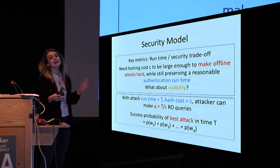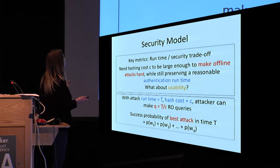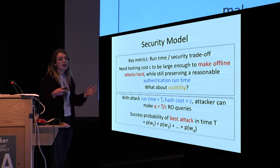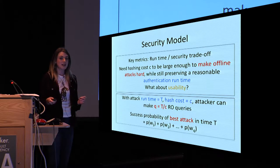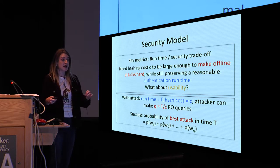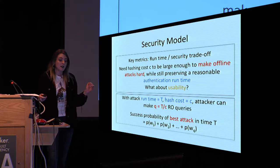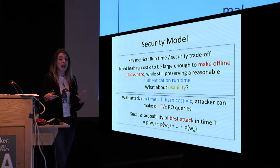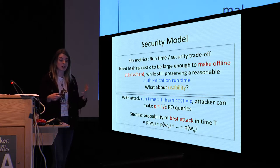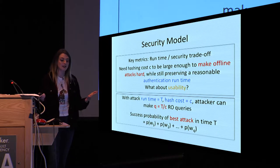To recap, we have two key metrics: authentication runtime and security. There's an inherent trade-off represented by the hashing cost—we want C large enough that offline attacks are hard, but not so large that authentication runtime becomes unreasonably slow for legitimate users. It's a constant balancing act between the two.